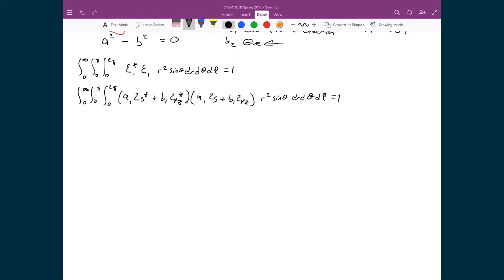I'm going to foil out these terms, 0 to infinity, integral of 0 to pi, 0 to 2 pi, and then I'm going to have A1 times A1, 2S star, 2S, plus A1 B1, 2S star, 2P Z, plus B1 A1.